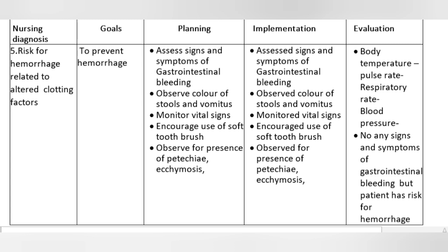Evaluation: Body temperature, pulse rate, respiratory rate, blood pressure. Patient knows any signs and symptoms of gastrointestinal bleeding, but patient has risk for hemorrhage. Thank you.